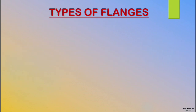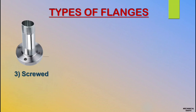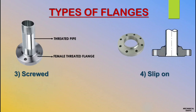Next flange is screwed flange. Screwed flange doesn't have any welding joint — only threaded. A flange with inside thread is called female threaded flange. If the thread is external, it's called male threaded flange. Fourth flange is slip-on flange. This type of flange will be used in very low pressure lines only, because this kind of flange easily gets a leak. The flange is welded with the pipe.